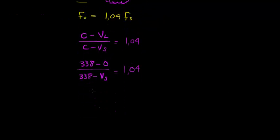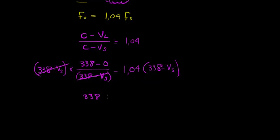And now it's a matter of solving this. So what we're going to do is multiply both sides with the denominator, 338 minus vS. So this side, it cancels. On the left-hand side, we have left 338 minus 0 is just 338. Here we multiply that in. So we find 1.04 times 338 minus 1.04 vS.